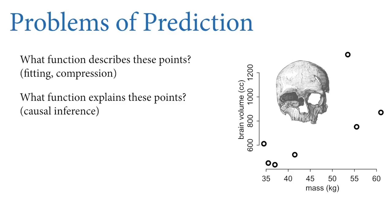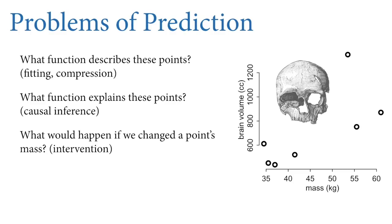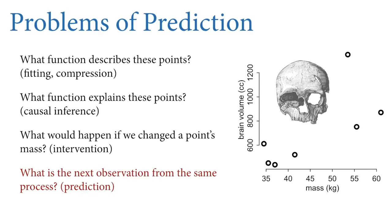If we had a successful explanation of these points, we could explain why they turned out the way they did in the history of these species. We might also ask a related causal inference question about interventions — what would happen if we changed the points' mass? This is a counterfactual question that relies upon having a good explanation. Finally, what we're going to talk about today is forecasting: what is the next observation from the same process? This is one meaning of the word prediction, and this kind of task doesn't require successful causal inference at all.